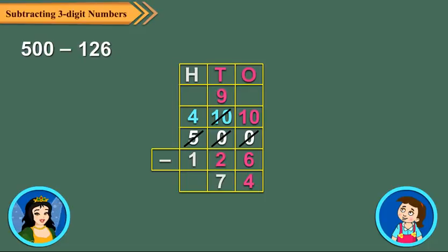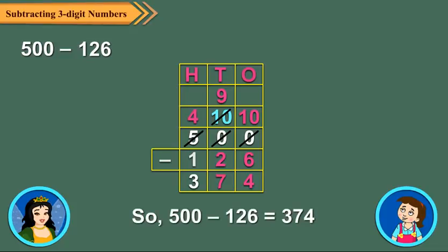Next, subtract the tens digits. 9 tens minus 2 tens is equal to 7 tens. Finally, subtract the hundreds digits. 4 hundreds minus 1 hundred is equal to 3 hundreds.